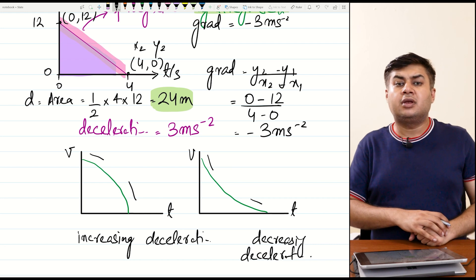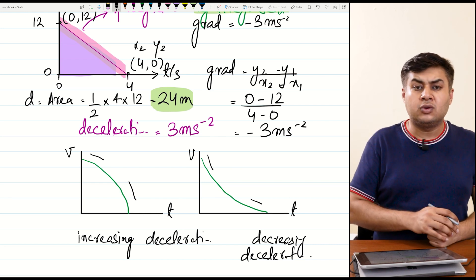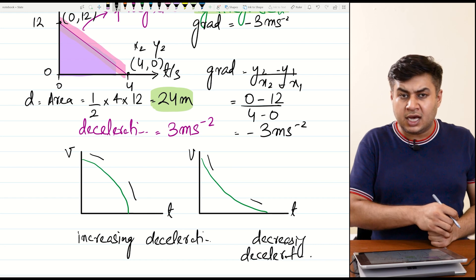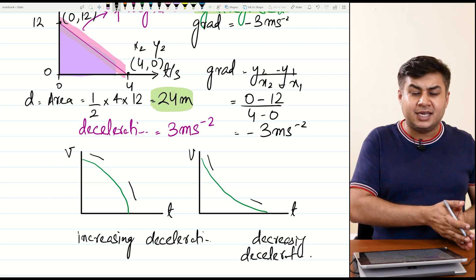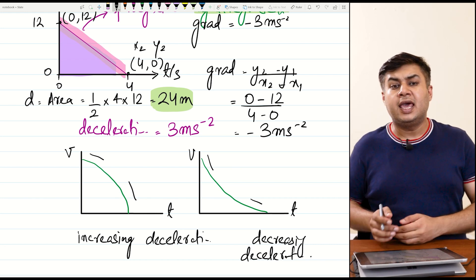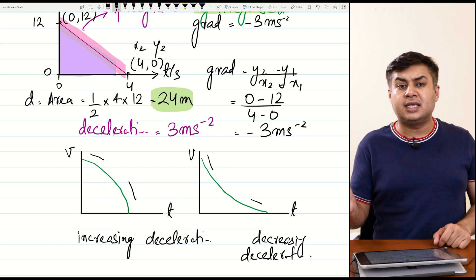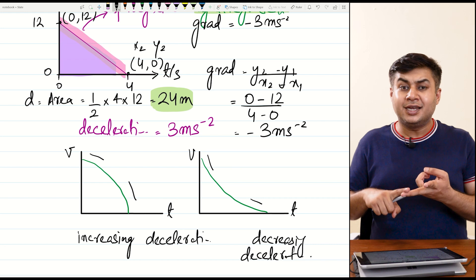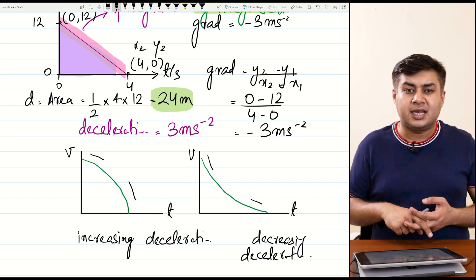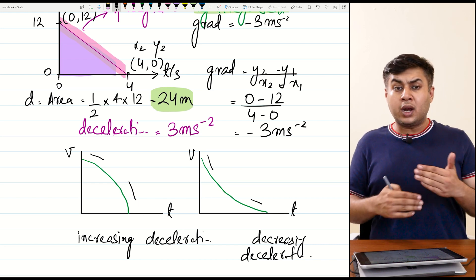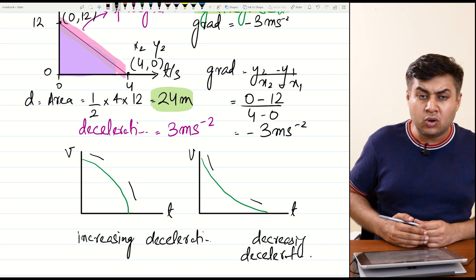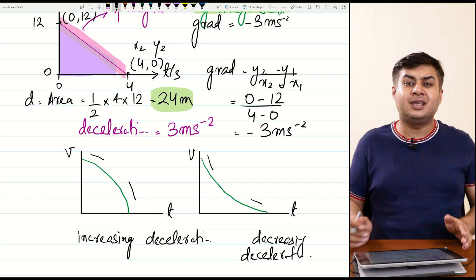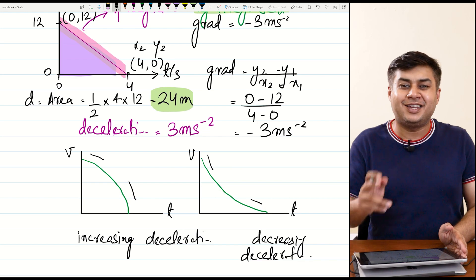Whenever your velocity-time graph is a curve rather than a straight line, that is the case of non-uniform acceleration or deceleration. In this class we have studied the concept of acceleration and deceleration and their types: increasing acceleration, decreasing acceleration, increasing deceleration, and decreasing deceleration. By learning more graphs and concepts we will be able to attempt much more difficult questions in the easiest possible way. Stay tuned, thank you.